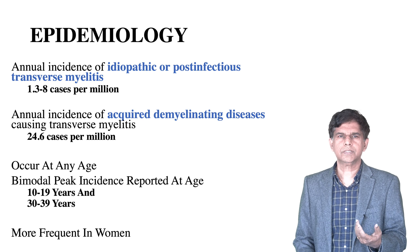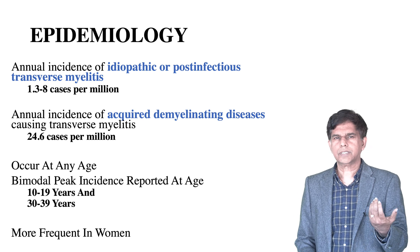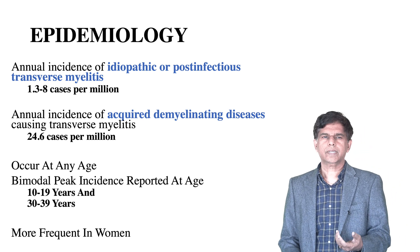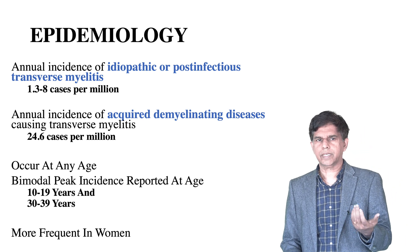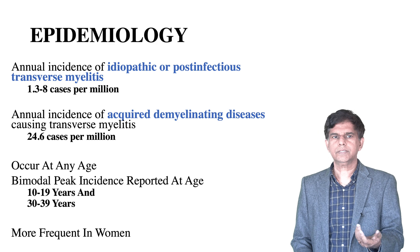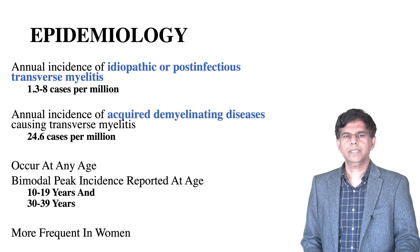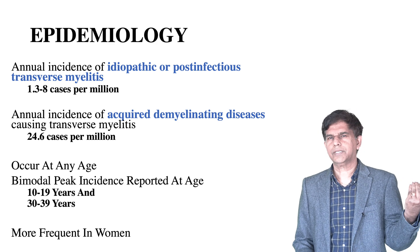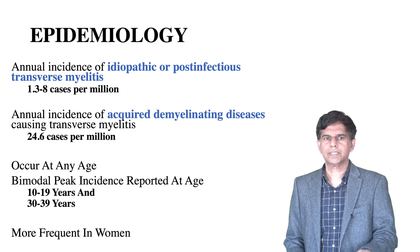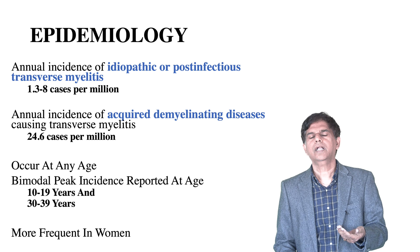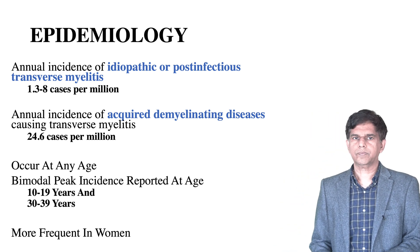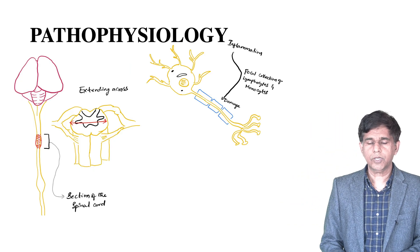Annual incidence is around one to three point eight cases per million. There is idiopathic and acquired forms, with acquired being more common. It can occur at any age, with a bimodal peak at ages 10 to 19 and 30 to 39, and it is more frequent in women.